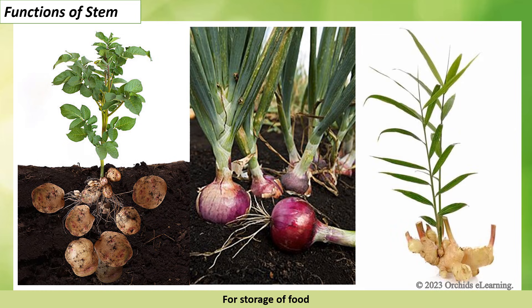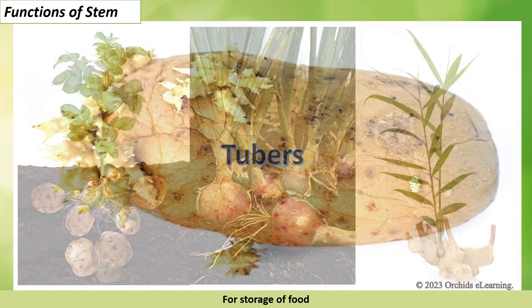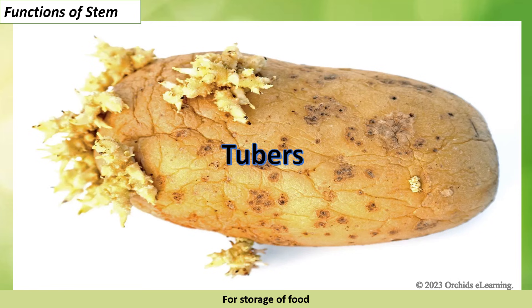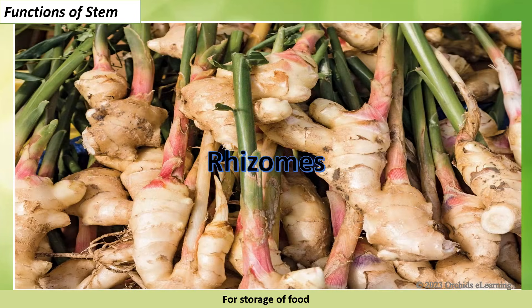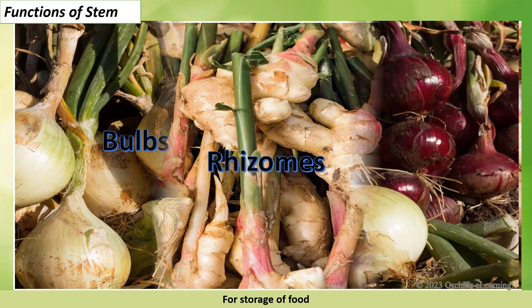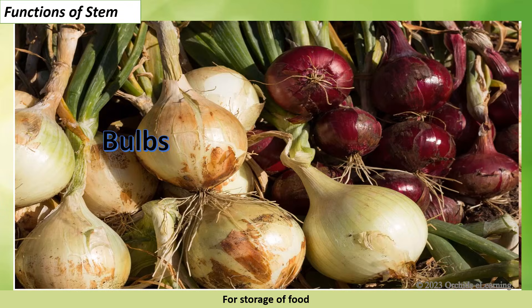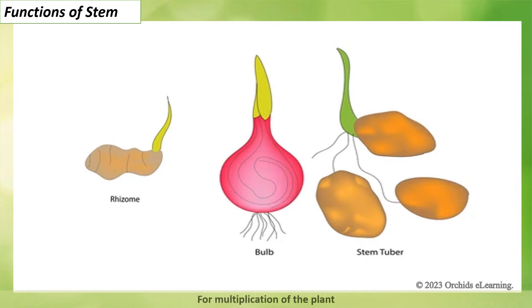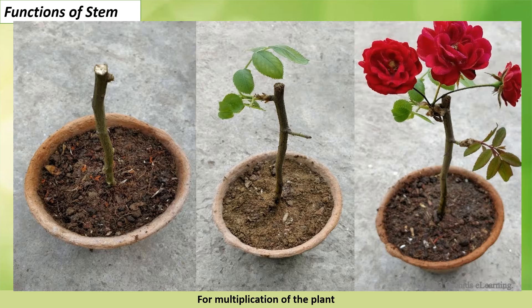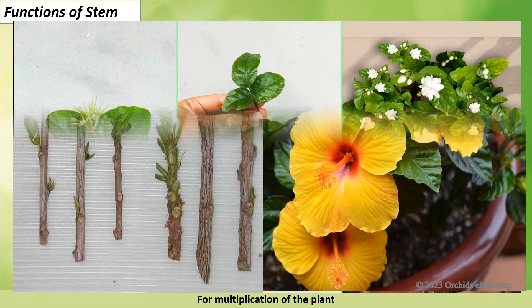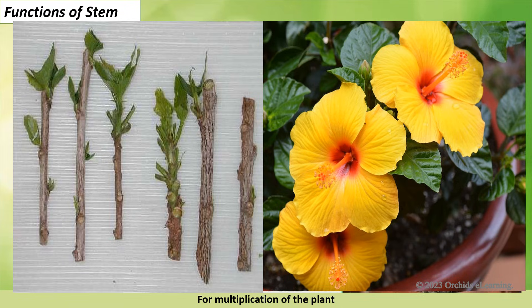For storage of food: potato, onion, and ginger are modified stems that store food. There are three common kinds of underground stems — tubers (example: potato), rhizomes (example: ginger), and bulbs (example: onion and garlic). For multiplication of the plant: rhizomes, bulbs, and tubers also help in the multiplication of plants. Plants such as rose, jasmine, and hibiscus grow into new plants through their stem cuttings.